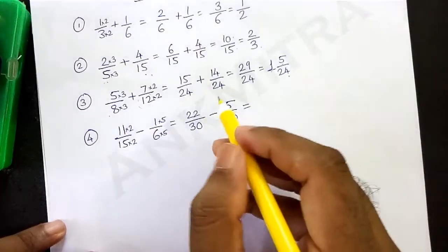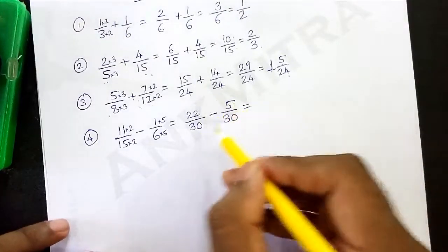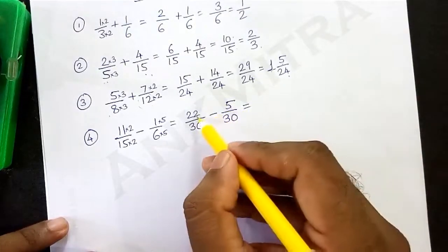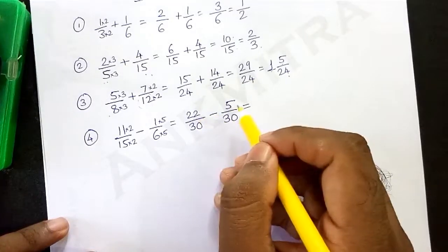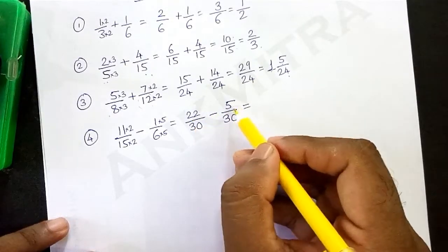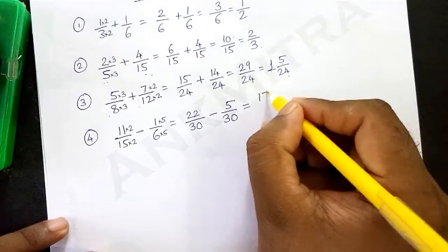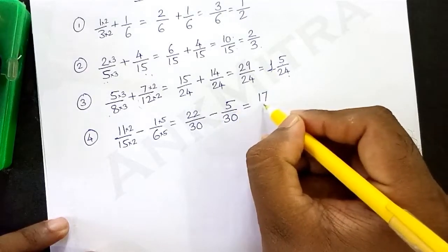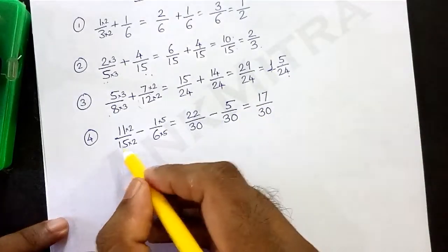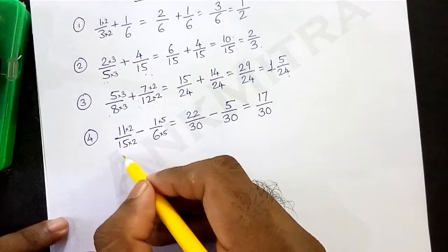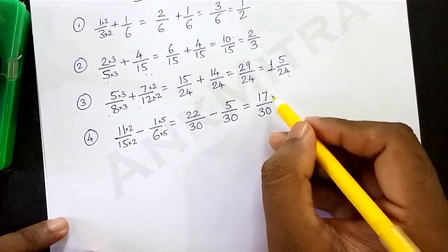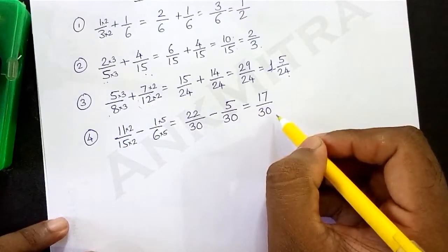For subtracting — the same procedure as addition — since the denominator is now equal, we can subtract the numerators. So 22 minus 5 is 17. So 17 upon 30 will be our final answer for 11 upon 15 minus 1 upon 6.